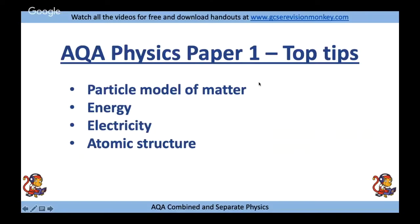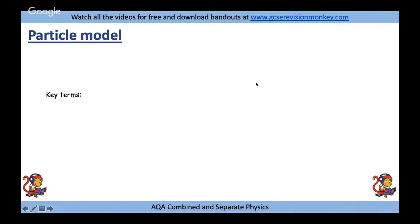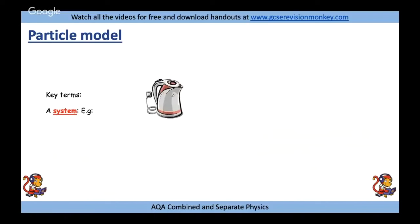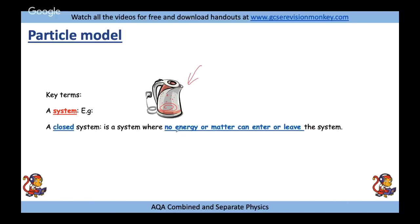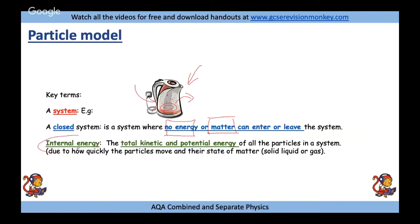Some top tips for the content coming up. The particle model is our first topic. Key terms: a system is the object or objects you're looking at - it could just be the water inside a kettle, or a two-object system including the heating element and the particles inside. A closed system is one where no energy or matter can enter or leave.